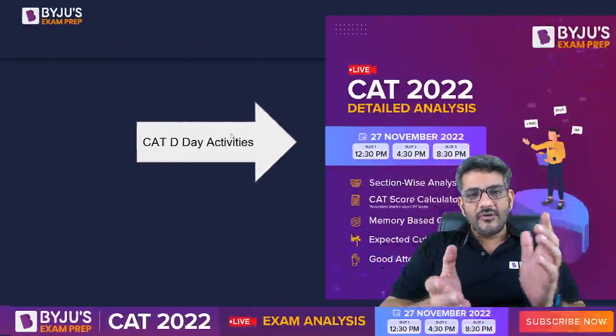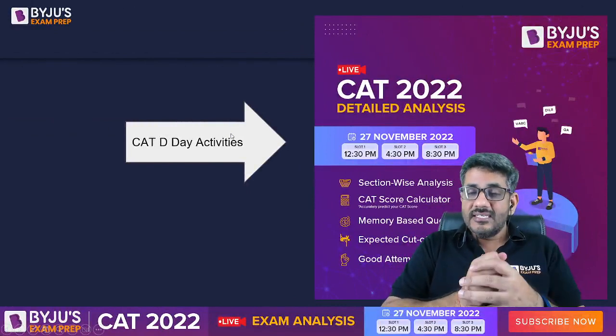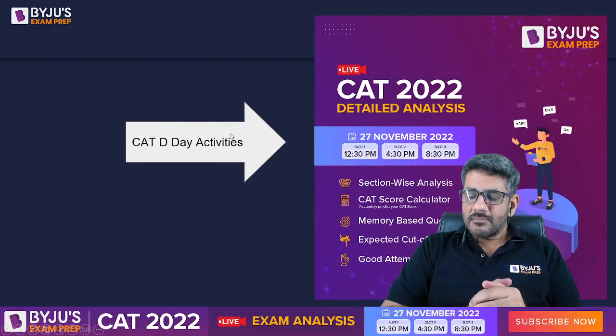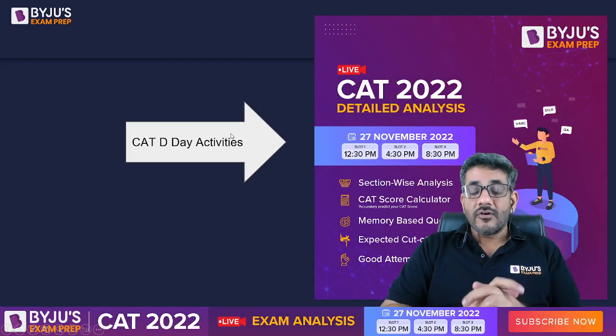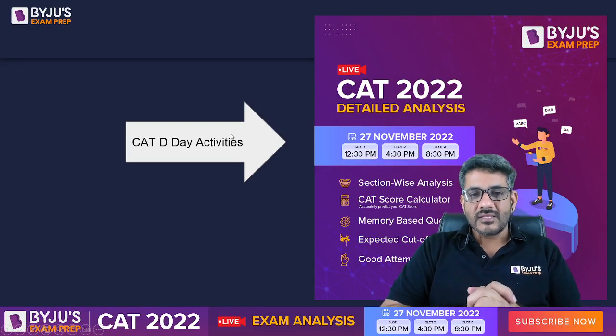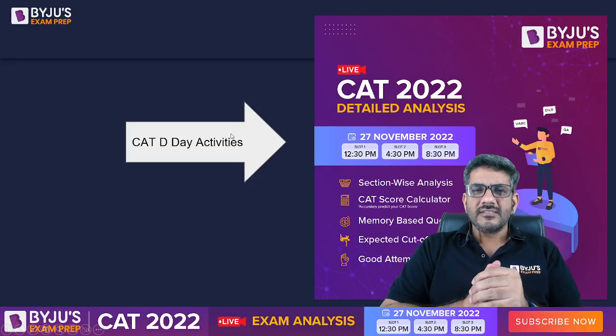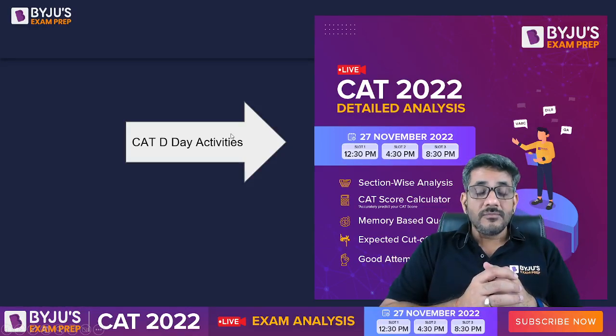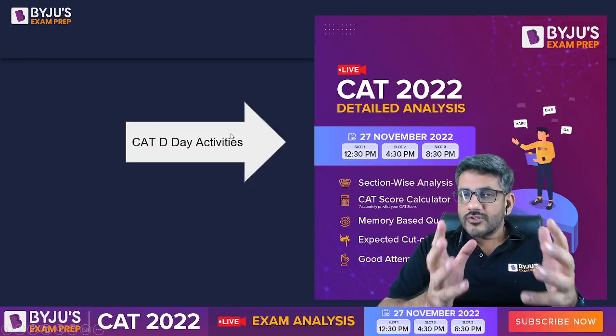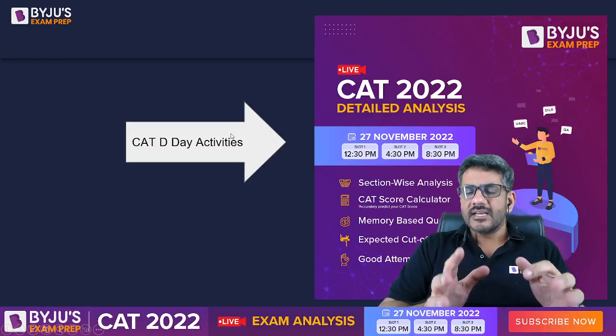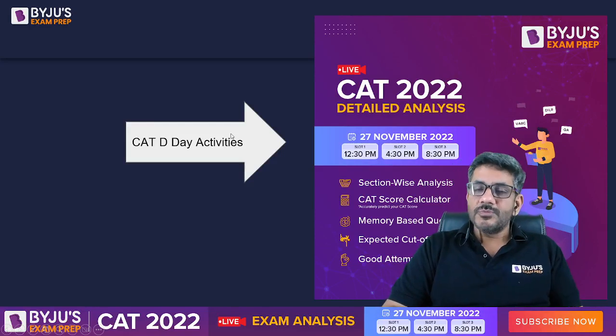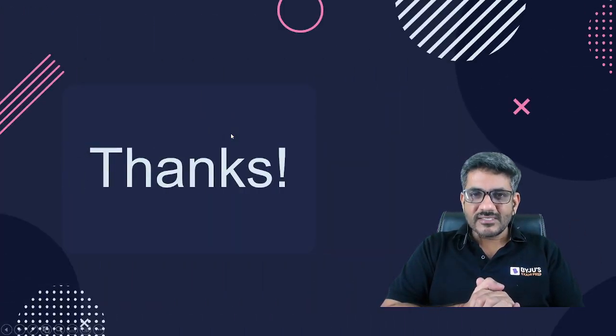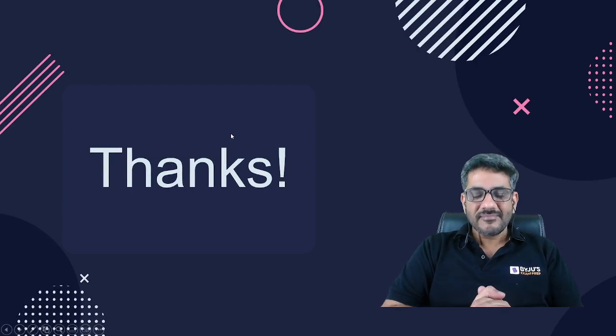So, that was the question of the day. I am sure you liked it, guys. And yes, on CAT D-Day, we will be there with you throughout the day. 27th of November, mark the date. We will be there with you for slot 1 analysis, slot 2 and slot 3. Along with that, we will also be discussing section-wise analysis. The CAT score calculator would be there, which will accurately predict your CAT score. We will also be discussing some memory-based questions and expected cut-offs. So, that is all for today, guys. I am sure you liked the question. It is going to help you in your CAT exam. Thank you very much.